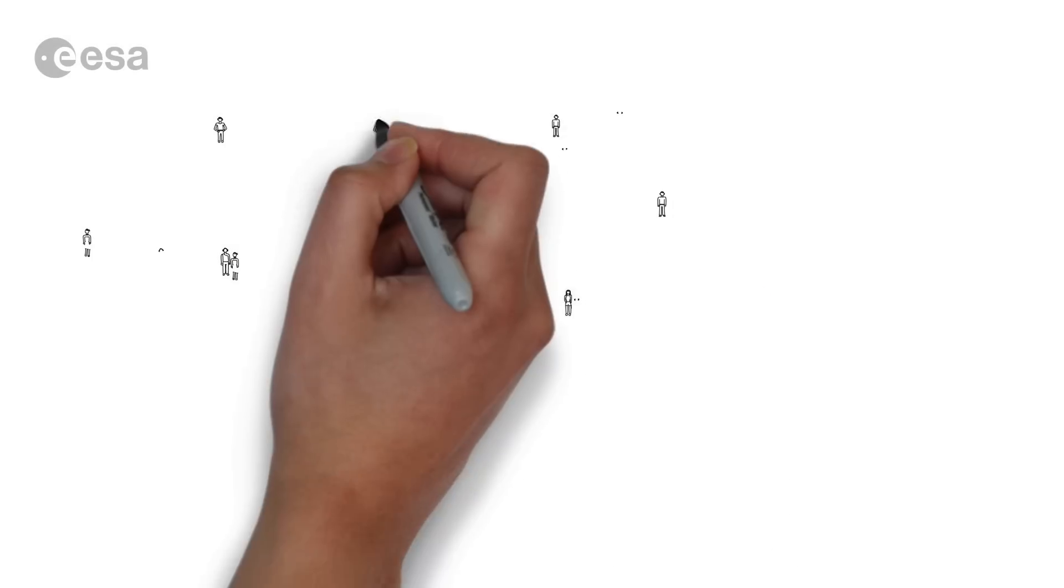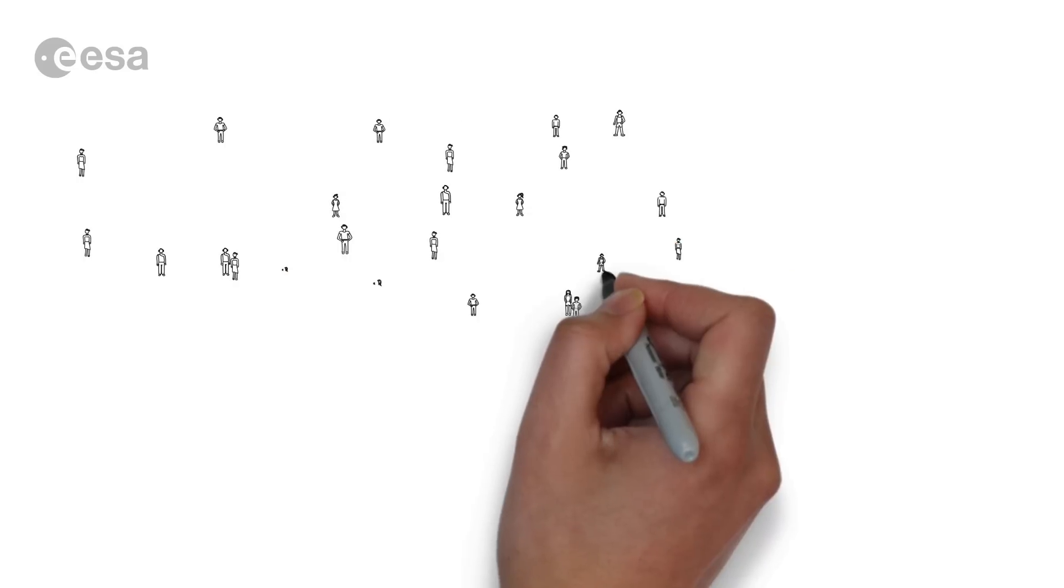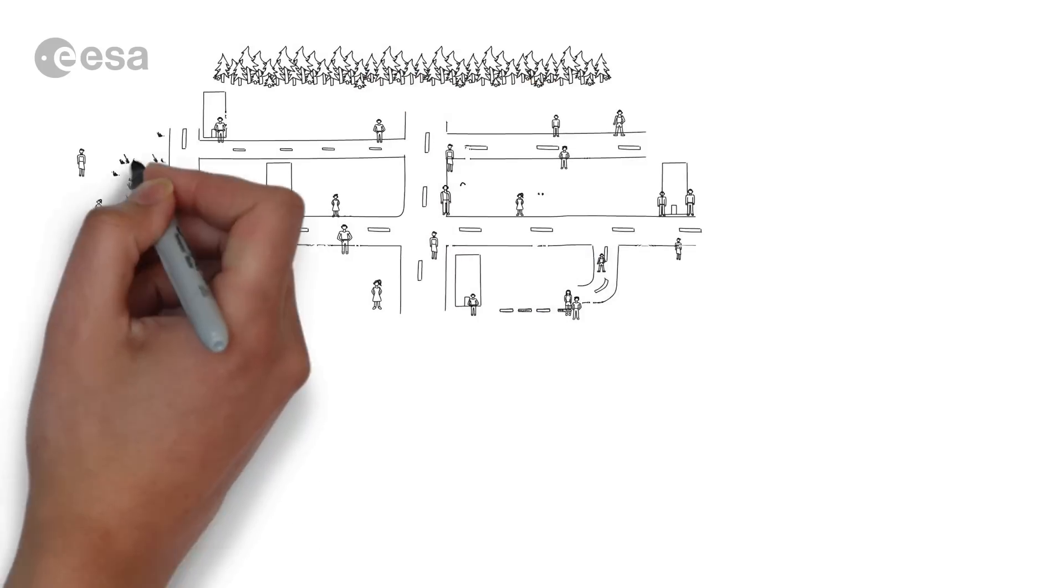Since 1970 the world's population has doubled from 3.5 to 7 billion human beings and it is still continuously rising. The more people we become on the planet, the more space we require.